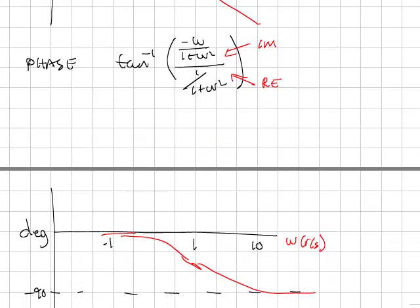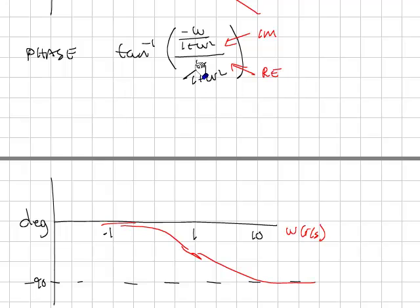To do the phase, you take the values and calculate the phase angle, where this is the imaginary part, this is the real part, arc tangent. Substitute in values from omega, go from 0 to infinity. Plot those on the phase portion of the Bode plot. The phase is plotted in degrees.